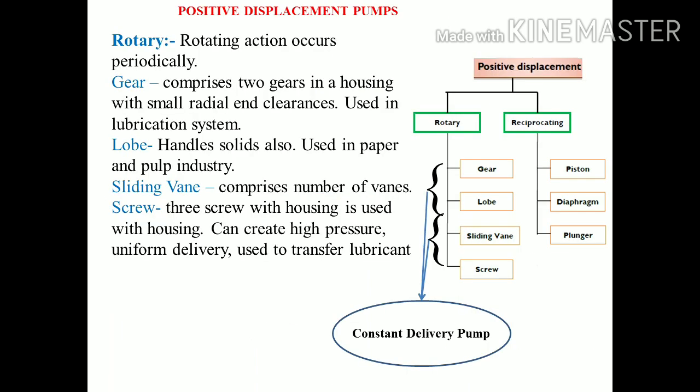Now coming to the classification details and where each is applicable. The constant delivery pump includes basically the gear pump, lobe pump, sliding vane pump, and screw pump. In the rotary pump, the rotating action occurs periodically. The gear pump is one of the main types of rotary pump — it comprises two gears in a housing with a small radial end clearance, and is used in lubrication systems.